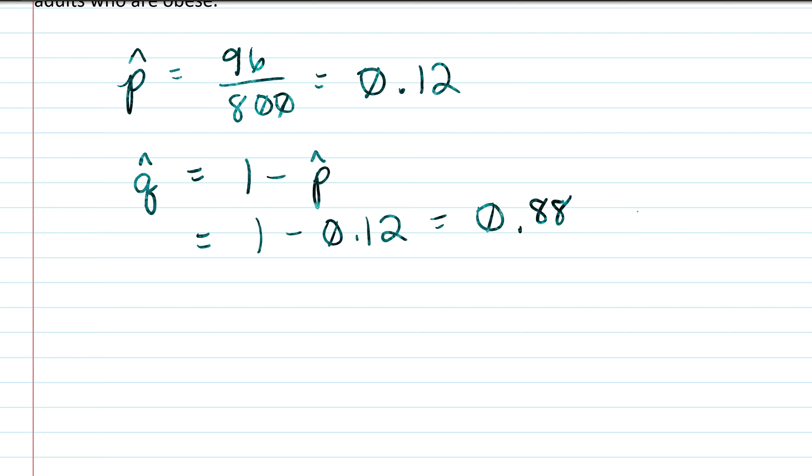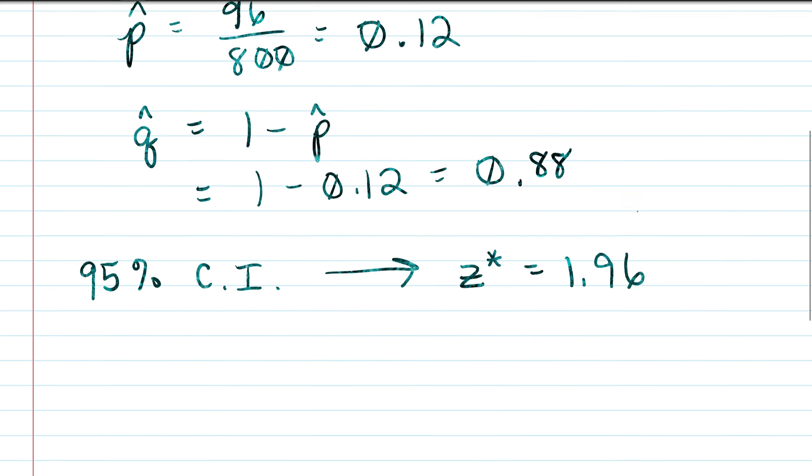All right and next we're looking at a 95% confidence interval. This is what the question is asking us to figure out. So this means that our critical value our z-asterisk is equal to 1.96. So this is a value that you're probably just given a table of values for 90%, 95%, and 99%. So the corresponding value for 95% is 1.96.